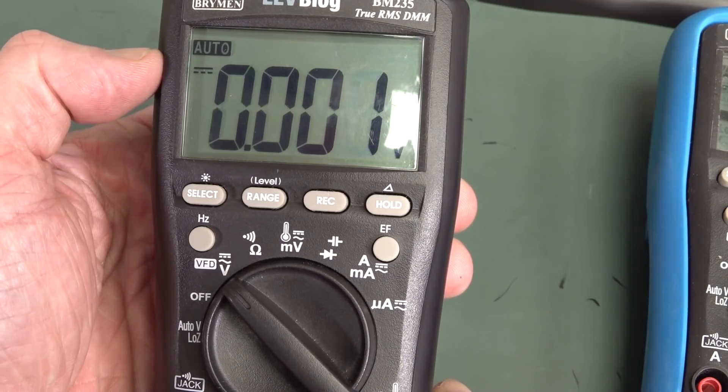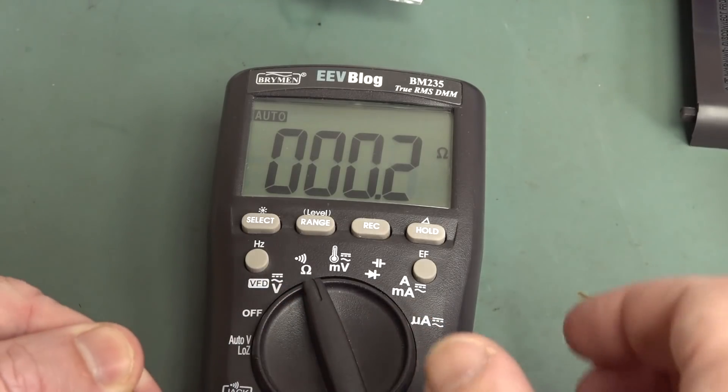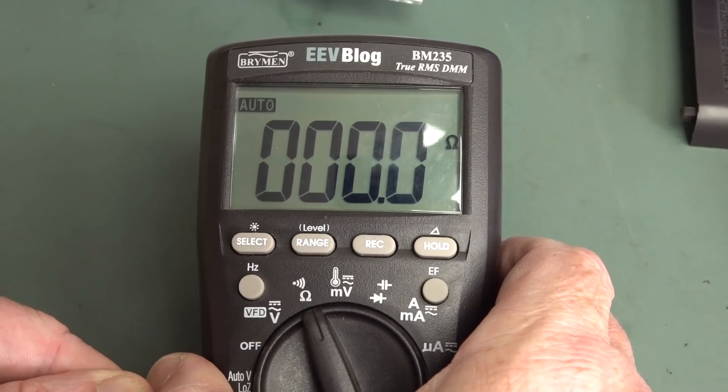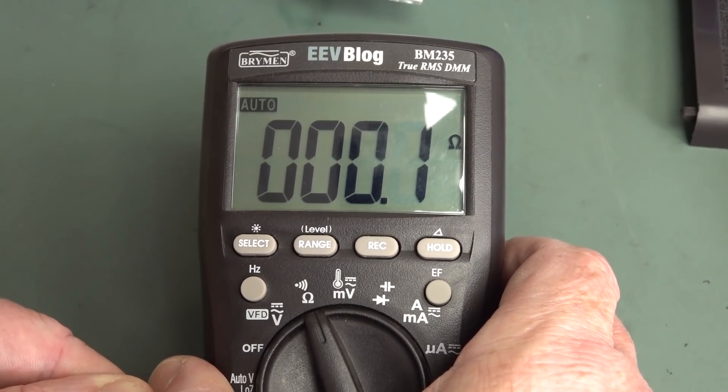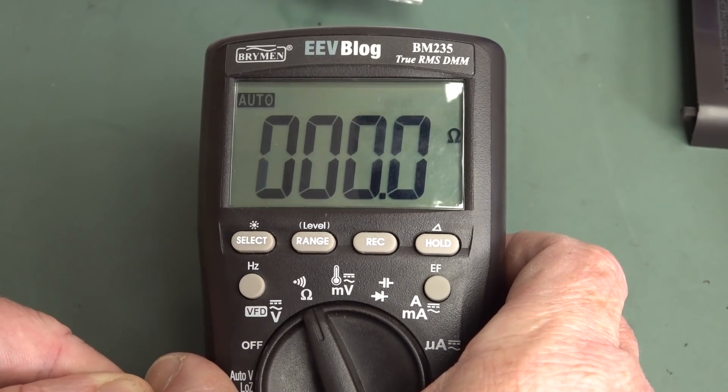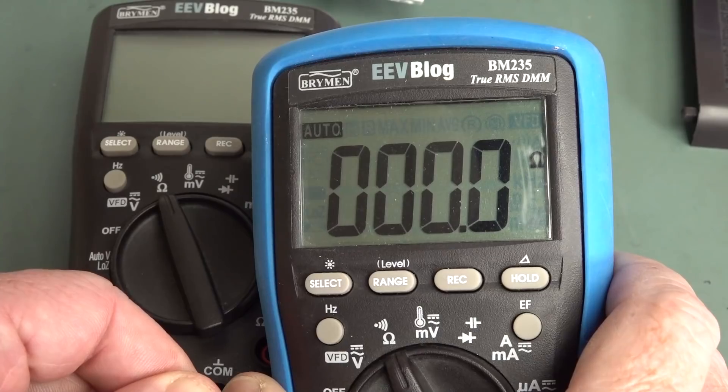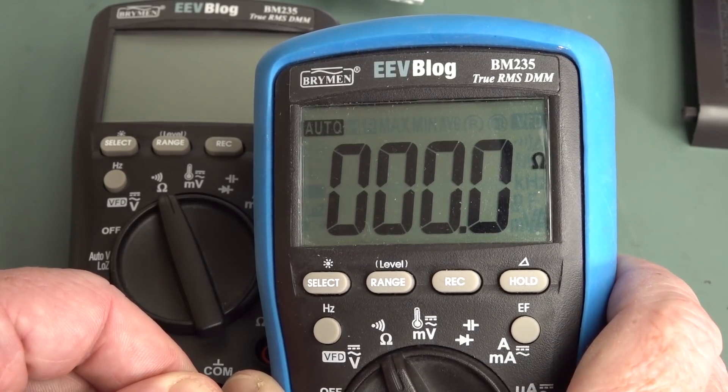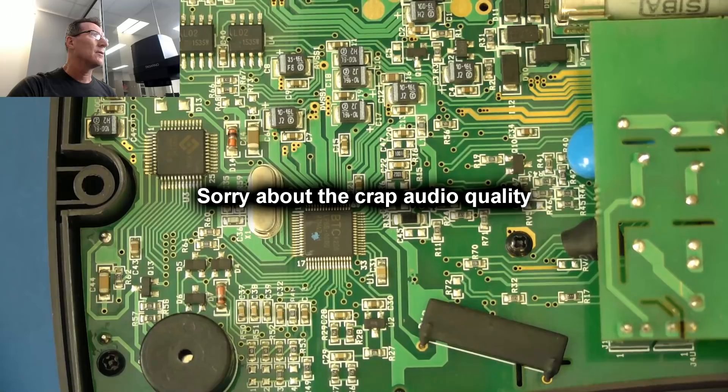Brand new batteries. Still doing it. Now, the ohms mode does work on here. But, look. Not sure if you're going to be able to pick that up. But there's a weird... Yeah, you can see it on camera. There's a weird flickering on those digits which you do not get on a regular BM235. There's a regular one. You just don't get that. So, yeah, something shifty going on. Something dodgy, brothers.